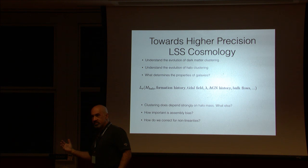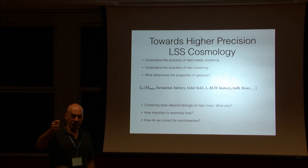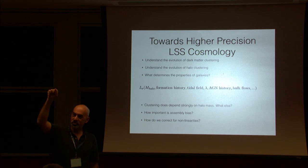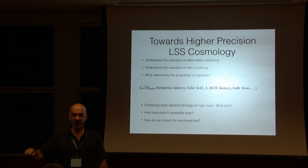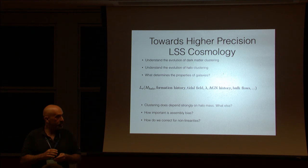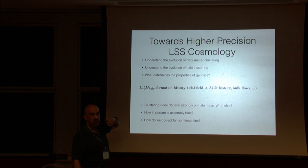We know there's a dependence on environment, and there are a bunch of pieces. But if I gave you the initial conditions and told you: here's the halo, this is its environment, this is its history — how that is going to determine whether that halo will produce a galaxy ending up in BOSS, DESI, Roman, Euclid, or whatever — we do not know. Halo mass is a good start, but what is that next parameter? We're going to need to understand that.